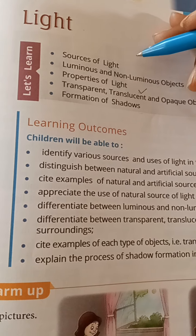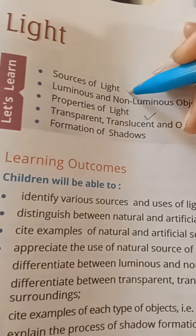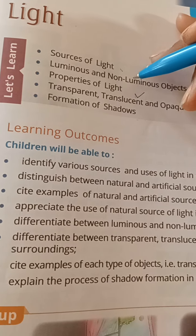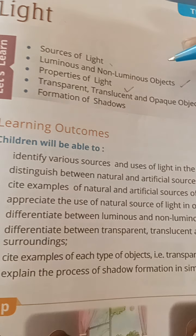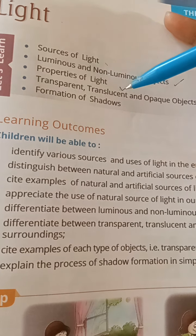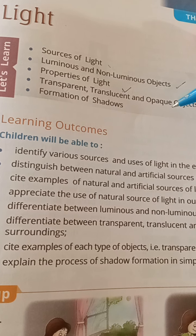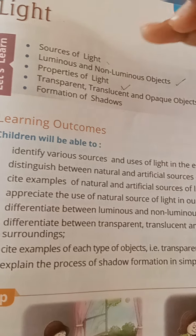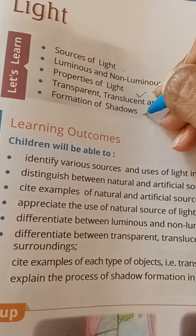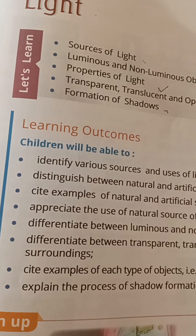In this lesson we will study about sources of light. There are different sources of light — some are natural, some are artificial. We will also discuss luminous and non-luminous objects, and the difference between them. We will also study transparent, translucent, and opaque objects, and the formation of shadows — how shadows are formed by different objects.